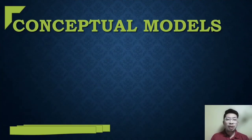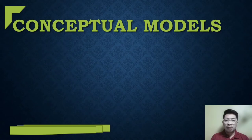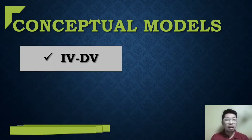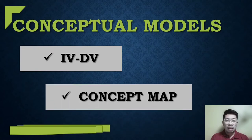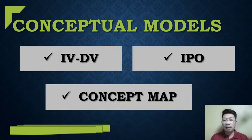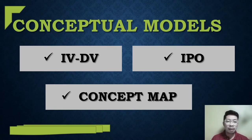Thinking about conceptual framework, there are three conceptual models. These three conceptual models are: IBDV, or independent variable and dependent variable; concept map; and IPO, or input-process-output. The problem is knowing what, when, and how to choose the correct conceptual model that is fitted to a certain study.